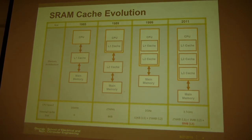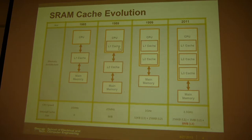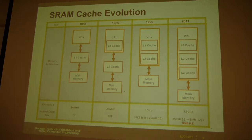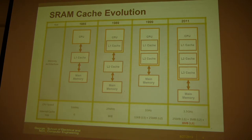Looking at the evolution of SRAM over the past several decades: in the 1980s, the L1 cache SRAM was actually off-chip from the processor. The trend has been to integrate the cache on-chip. Today we typically have three levels of cache on-chip — for example, L1 at 256 kilobytes, L2 at 1 megabyte, and L3 at 8 megabytes. Servers may have even larger L3 caches, up to 20 megabytes.